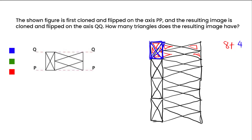Continuing: eight plus four is twelve, plus two more here, plus two — so twelve plus two equals fourteen. So in the first section we got fourteen triangles.